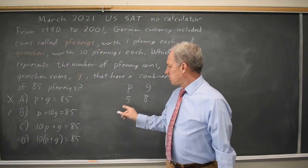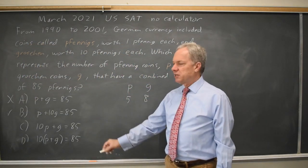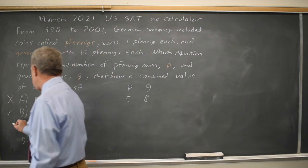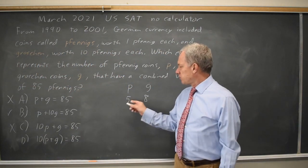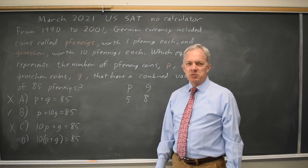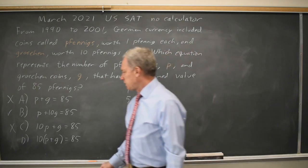In choice C, 5 times 10 is 50, plus 8 is 58. That does not work, so this is not the correct answer. And in choice D, 5 plus 8 is 13, 10 times 13 is 130, which is not 85.